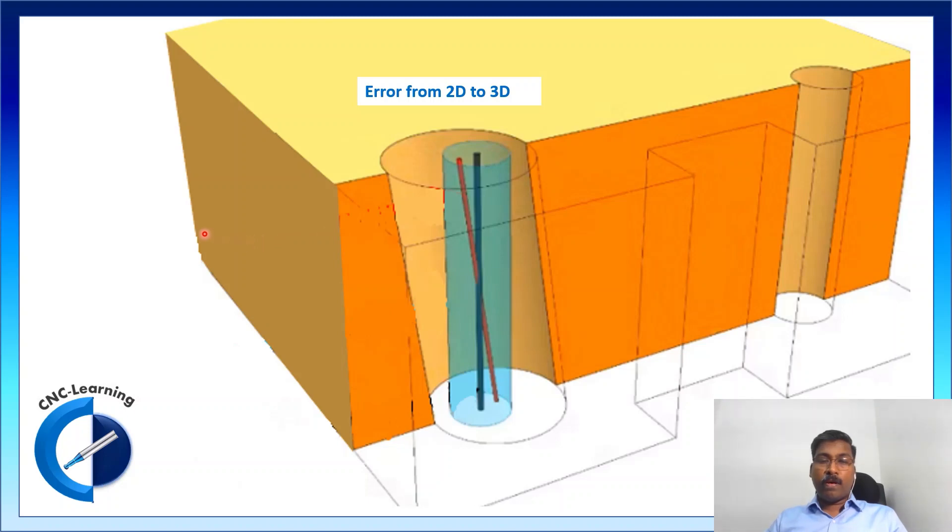Now, so far, we were considering a 2D. Now, if you look at 3D, we already discussed that the perpendicularity of the feature need to be considered.